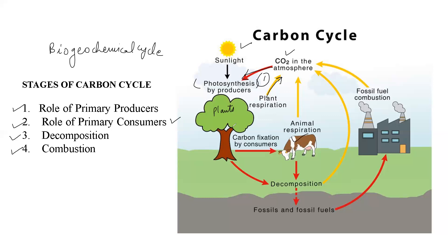When these animals feed on plants, the carbon gets fixed into their bodies as organic carbon. This specific phenomenon is known as the carbon fixation step, so stage two can also be called carbon fixation. These animals also respire, and when they respire, carbon dioxide is again released back into the air. This is the second stage where the primary consumers are involved in the cycle.